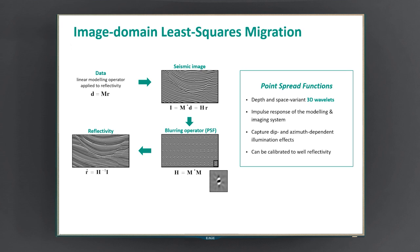The starting point is the seismic image, which is the result of the action of the migrator operator on the recorded data. The link between this migrated image and the earth reflectivity is represented by the Hessian operator. This controls the amount of blurring that a point scatterer in the reflectivity model would exhibit in the image. Image domain least-squares migration uses point-spread functions, or PSFs, to capture the dip and azimuth-dependent effects due to the acquisition geometry and the complex velocity model. Point-spread functions are effectively 3D wavelets — a representation of the spatially variant 3D wavelet embedded in the migrated image.